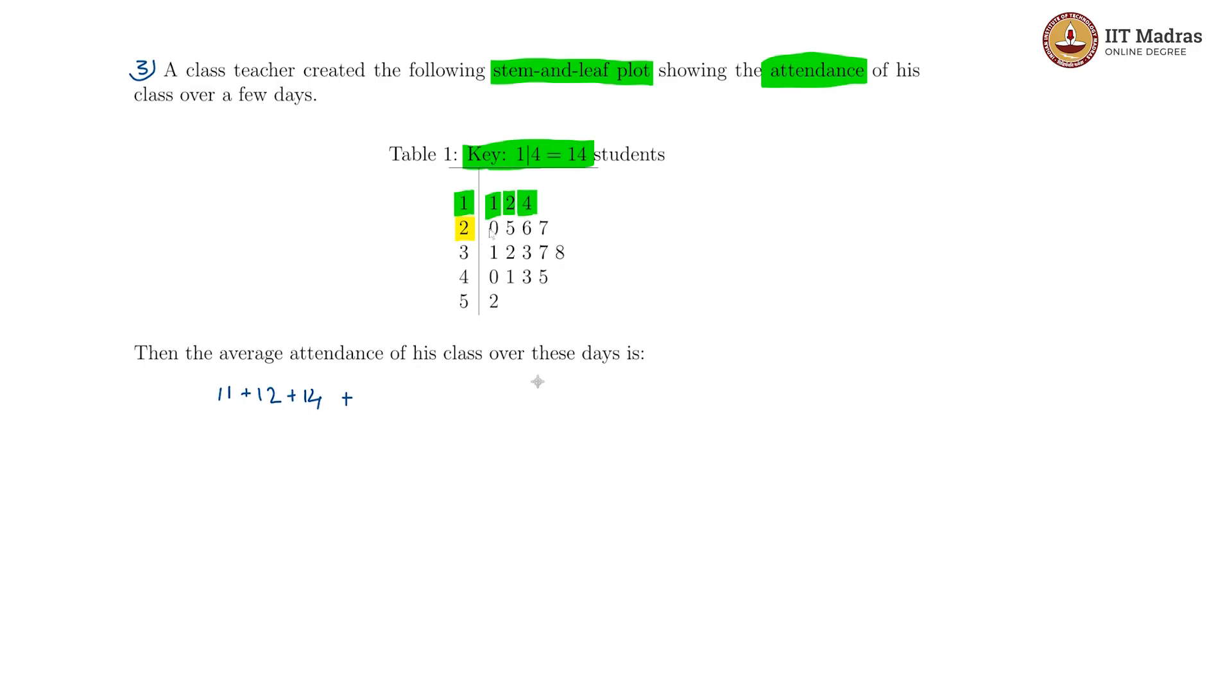The 20s we have a 25, 26, and 27. So 20 plus 25 plus 26 plus 27, then further on.